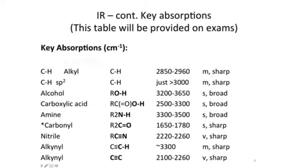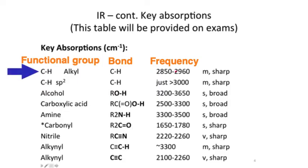On screen are the different types of functional groups, the bond in question in the right-hand column, and then what frequency that bond would absorb, or where they would be found on the infrared spectrum. For example, a CH-alkyl group would be found, or has a stretching frequency, between 2850 and 2960 wave numbers.